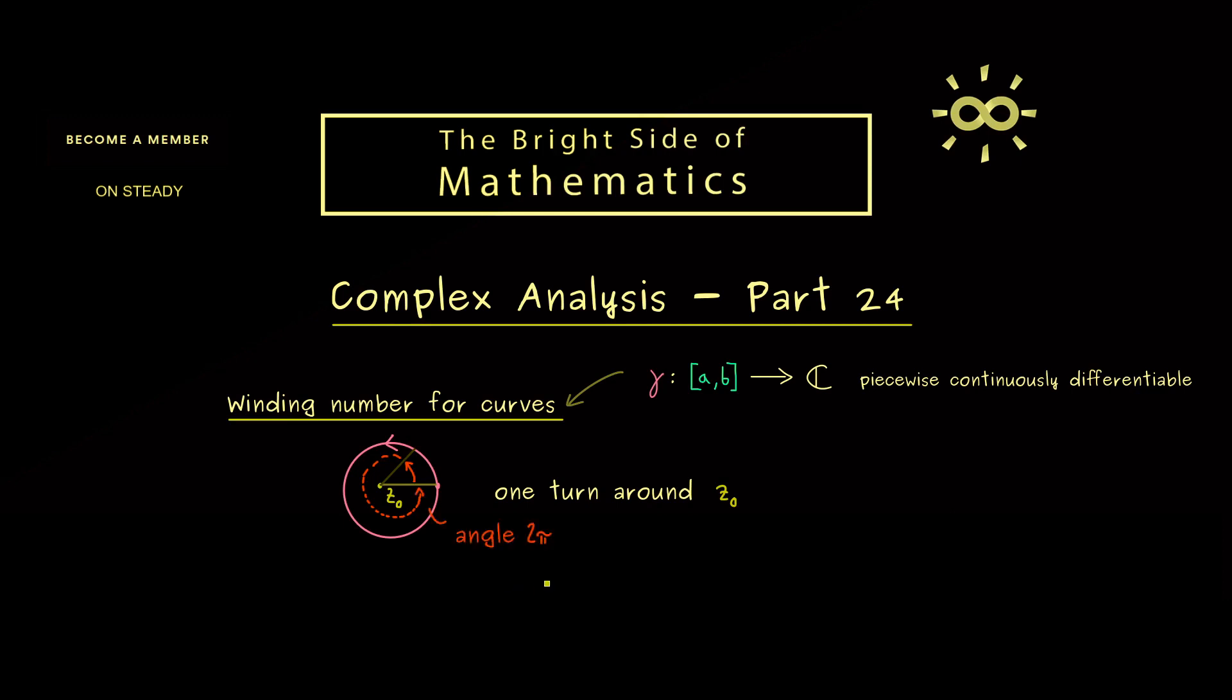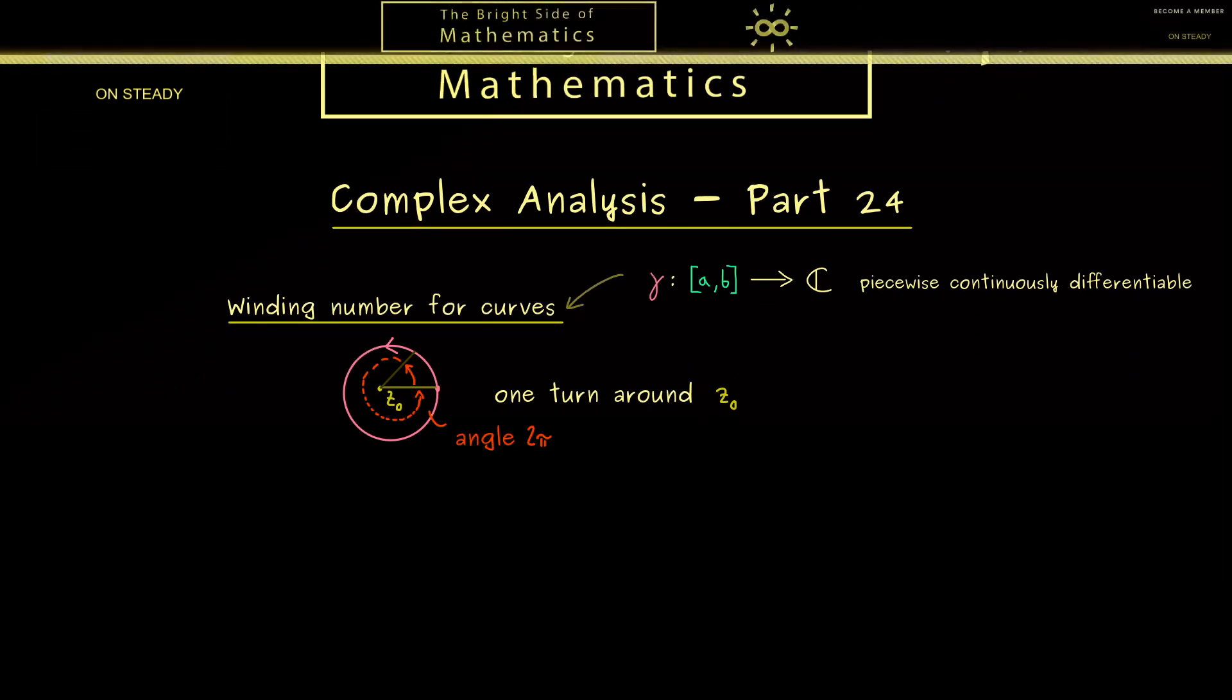Another way to visualize that is you imagine that you stand as a person at the point z₀, and then you just follow the curve with your head. At the end you see you have completed a full rotation. Hence what you should see is that the concept here is not complicated at all.